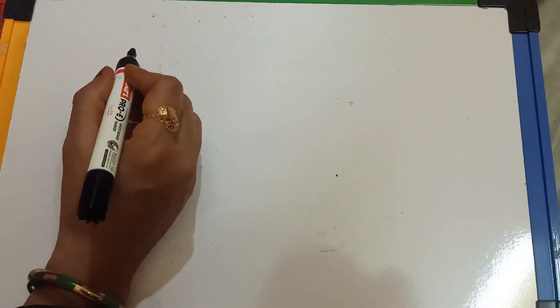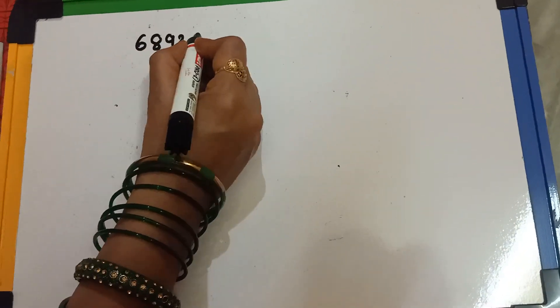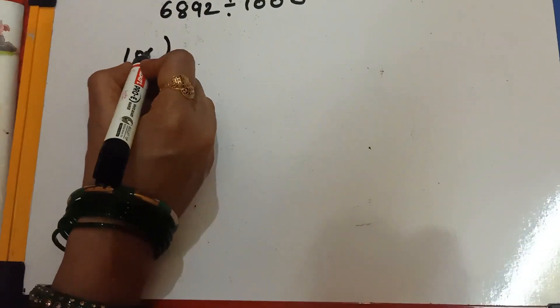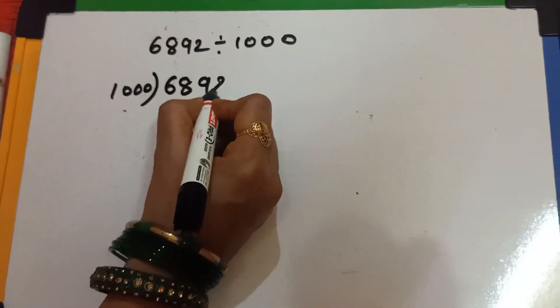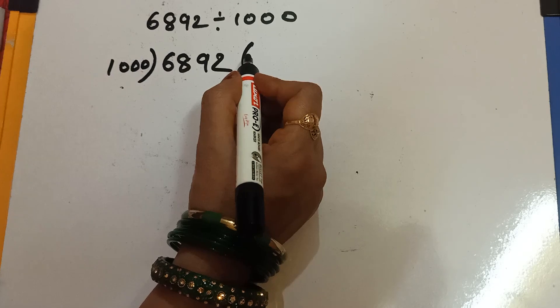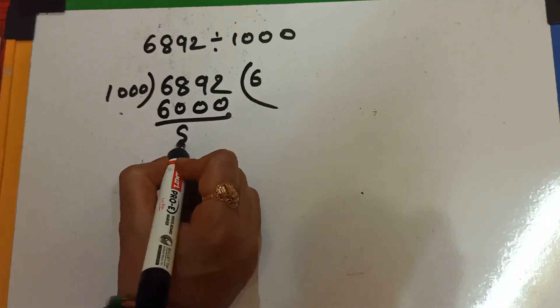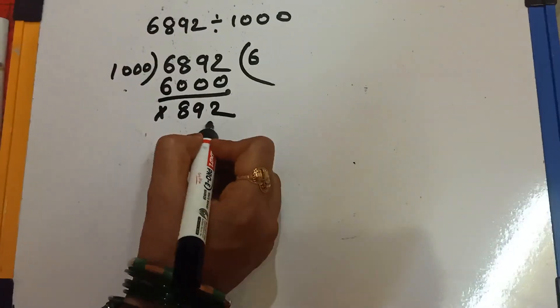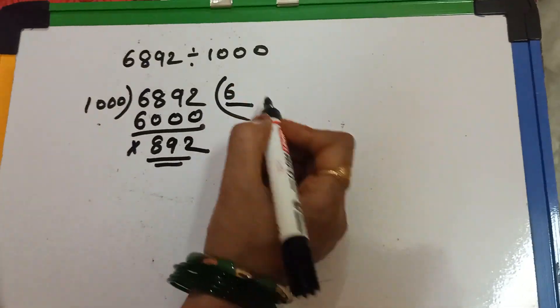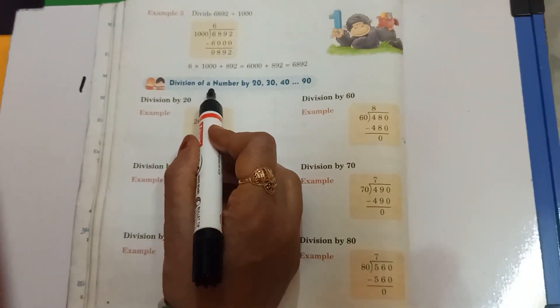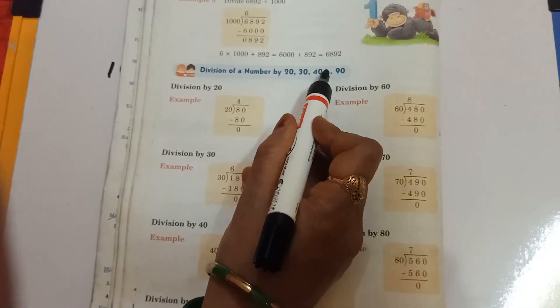One example for 1000: 6892 divided by 1000. We write 1000 into 6892. Working through the steps, the quotient and remainder can be identified. Look carefully in your book.